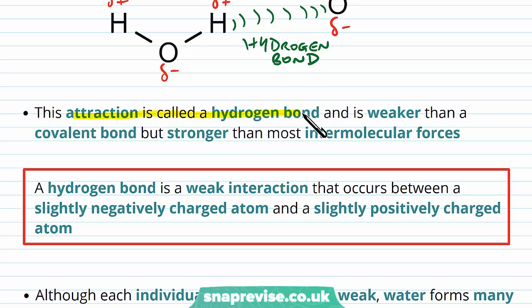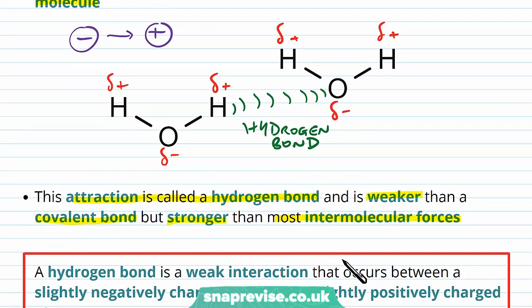The hydrogen bond is the type of attraction that we see, and it's weaker than a covalent bond. So it's weaker than the bond connecting the hydrogen and oxygen inside the molecule, but it is stronger than most forces that connect molecules together. We can have certain bonds and attractions which are inside molecules, like covalent or ionic bonds.